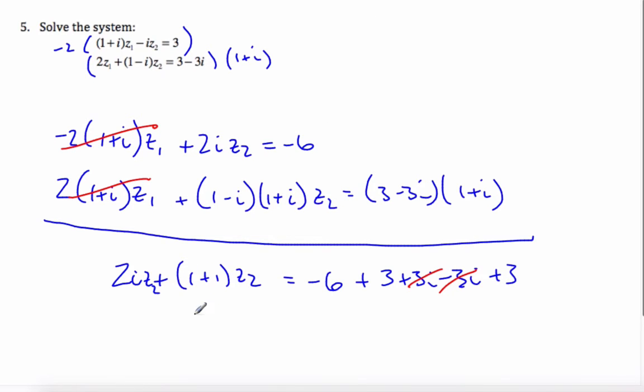And so I have, if I put these together, I have 4. Or no, I don't, hold on. I have z2 times 2 plus 2i is equal to 0. Minus 6 plus 6 is 0. And so z2 is equal to 0.